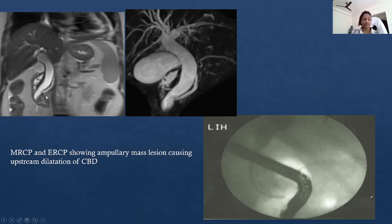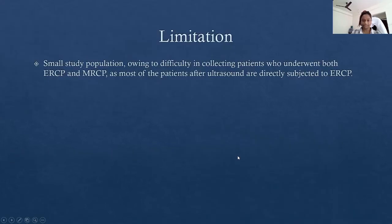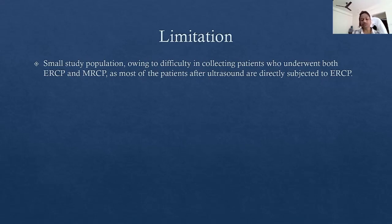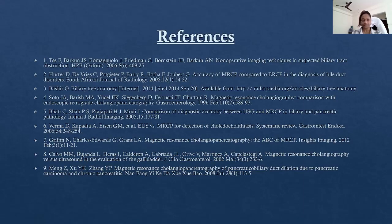Here we can see upstream dilatation of the CBD caused by an ampullary mass lesion, resulting in proximal dilatation of the whole biliary tract. One limitation of our study was the small study population, owing to the difficulty in collecting patients who underwent both ERCP and MRCP, as most patients after ultrasound are directly subjected to ERCP. These are the references used for the paper.